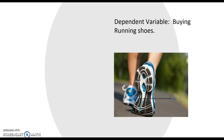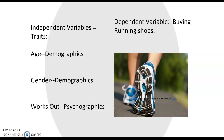Going back to our running shoes example: the independent variables — traits — we chose age, gender, and whether someone works out. That's two demographic traits and one psychographic or habit trait. A multivariate analysis will find which of these traits has the most impact on whether I buy running shoes, and it will rank the others. For instance, working out determines sixty percent of whether I buy shoes; age determines ten percent; and where I live — like Alaska — might matter too. I'm analyzing multiple variables simultaneously to look for cause.